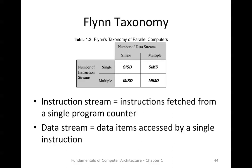Now let's look at the taxonomy of parallel computers. Michael Flynn proposed a very good taxonomy that is more helpful than just defining processing elements. He divided parallel computers based on how many instruction streams they can fetch and how many data streams they use, giving us four categories: SISD, SIMD, MISD, and MIMD — that is Single/Multiple Instruction stream combined with Single/Multiple Data stream.